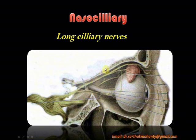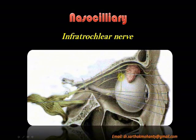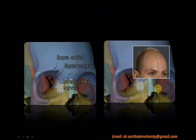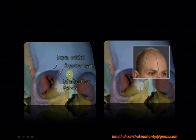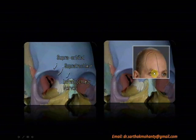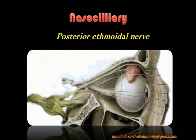Further branches of the nasociliary nerve include the infratrochlear nerve and the anterior ethmoidal nerve. The supratrochlear and supraorbital nerves — branches of the frontal nerve — together with the infratrochlear branch of the nasociliary nerve supply the sensory innervation to the forehead region. There is also a posterior ethmoidal nerve branch.